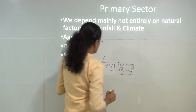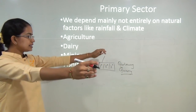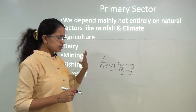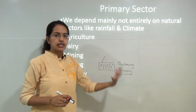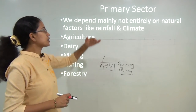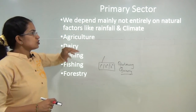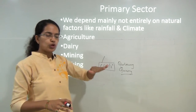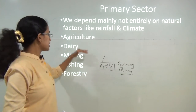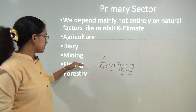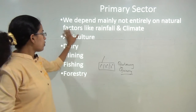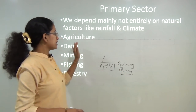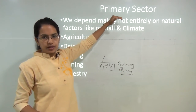Let us first start with the primary sector. As the name suggests, it is related to primary activities. Everything that relates directly to nature would come under the primary sector, so it is dependent solely on natural factors. For example, agriculture, dairy, mining, fishery, and forestry — all these are directly dependent on natural resources and are therefore classified under the primary sector.